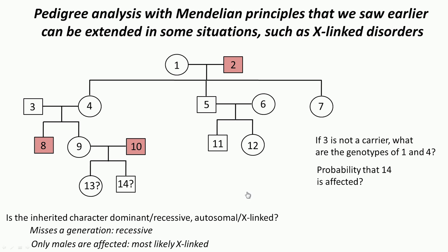If you see here, only males are affected — persons 2, 8, and 10 are affected, and all are males. That will happen most likely if it is X-linked. Therefore, it is a recessive disorder and it is most likely X-linked.